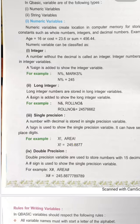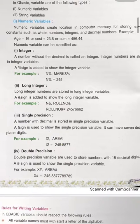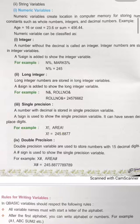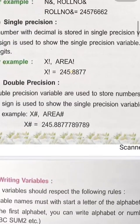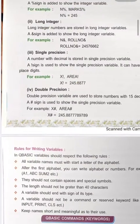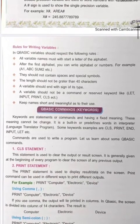When the normal integer range is exceeded, we use long integer. In single precision, a number with decimal can be stored; it uses an exclamation mark (!) to show the single precision type. For double precision, we use the hash (#) sign.